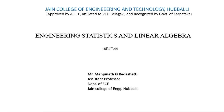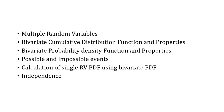Hello everyone, engineering statistics and linear algebra. In the last video we discussed the definition of multiple random variables, bivariate CDF and their properties, bivariate PDF and their properties, what is meant by possible and impossible events, calculation of a single random variable PDF using a bivariate PDF, and what is meant by independence — including the conditions to say that two random variables X and Y are independent.